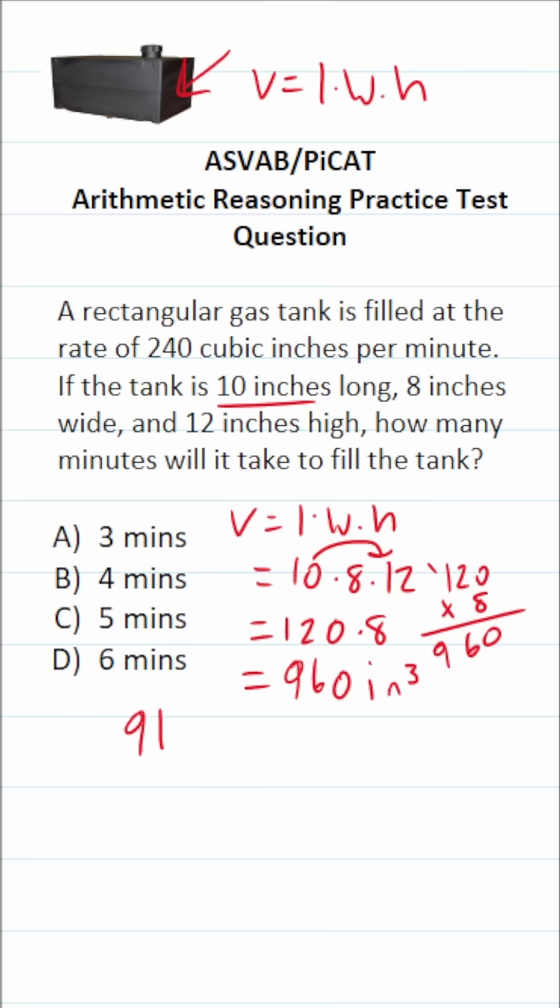Again, we have a gas tank that has a volume of 960 cubic inches. We know we can fill it at a rate of 240 cubic inches per minute. So to determine how many minutes it's going to take to fill this gas tank, we're going to do 960 divided by 240.